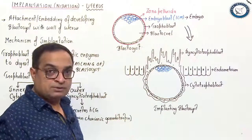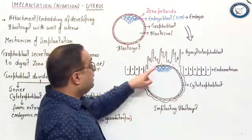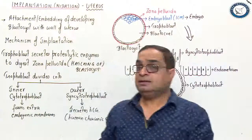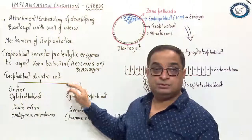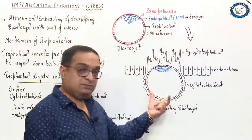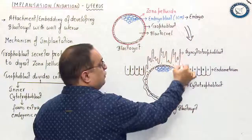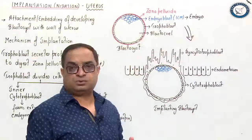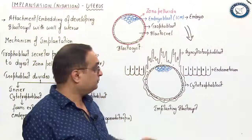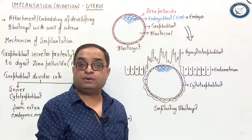As shown in the diagram of implantation, these are the columnar cells of the uterus — the endometrium. The zona pellucida has dissolved. When the zona pellucida dissolves, the next step is that the trophoblast divides into two layers: the inner cytotrophoblast and the outer syncytiotrophoblast, as also visible in the diagram. The word syncytium refers to a multi-nucleated structure where cellular boundaries are not very clear. Syncytiotrophoblast penetrates deep into the uterine endometrium and lays the foundation for the placenta.